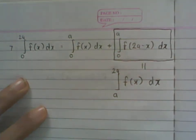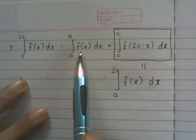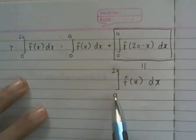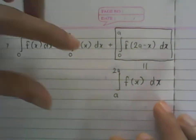The reason I am doing this is that using one of the previous properties, we can combine this integral and this integral—the integral from 0 to a of something plus the integral from a to 2a of that same something—and stitch them together.